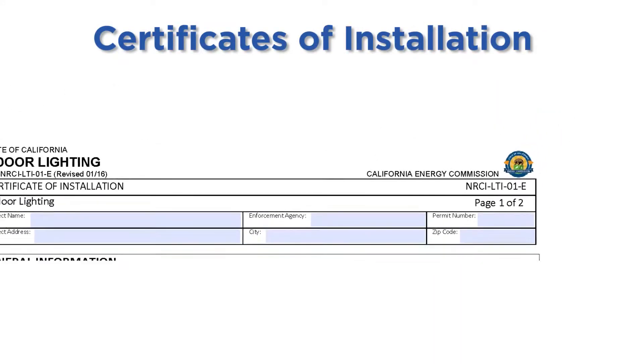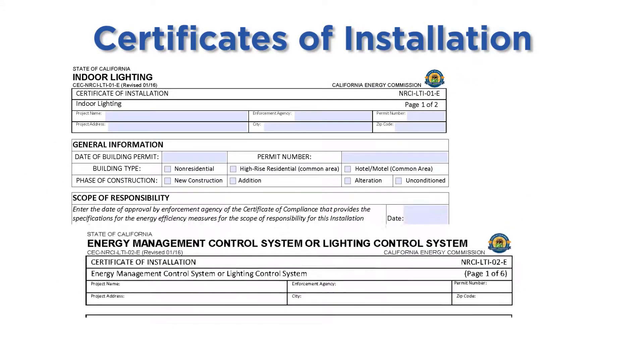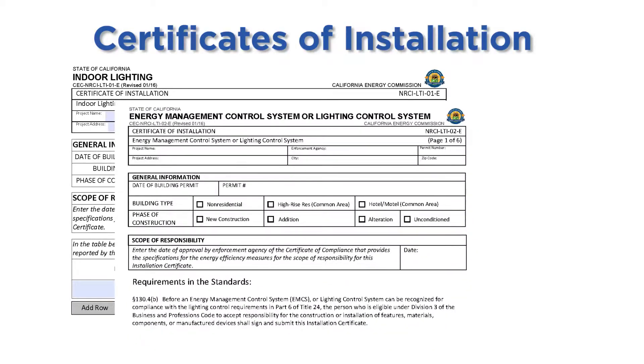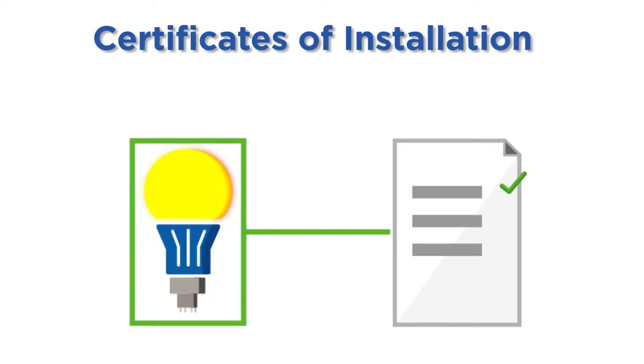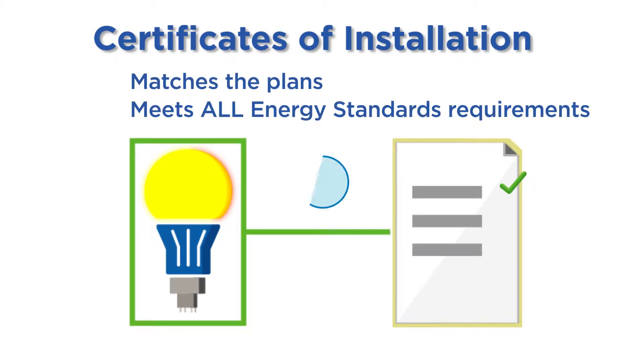The certificate of installation forms are completed during the installation phase by the installer or contractor. These forms are a declaration by the installer or contractor that the installed lighting system matches what is proposed on the plans and that controls and systems meet all energy standards requirements. The certificate of acceptance forms are completed by the acceptance test technician after the lighting system is installed, prior to final inspection. The building inspector can reference these forms to help with their inspection and to ensure that all tests have been passed and that the lighting system is operating to code.